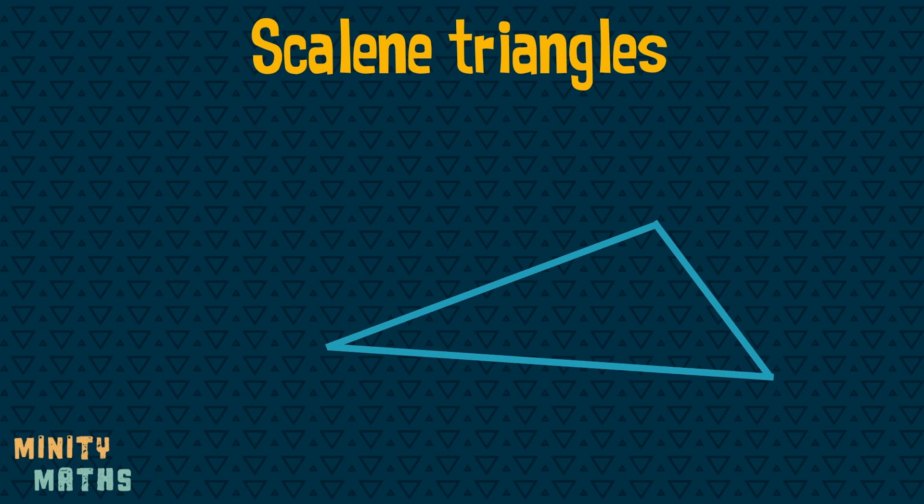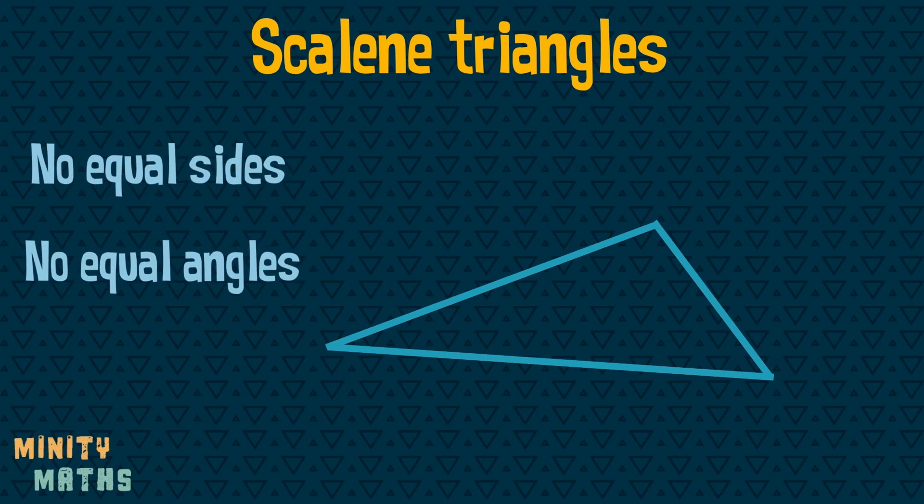Finally, a scalene triangle has no equal sides and no equal angles. It also does not have any lines of symmetry.